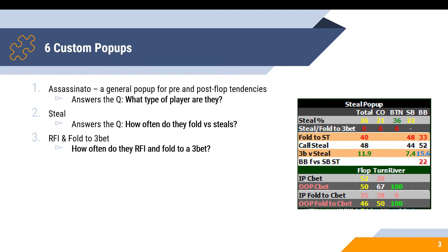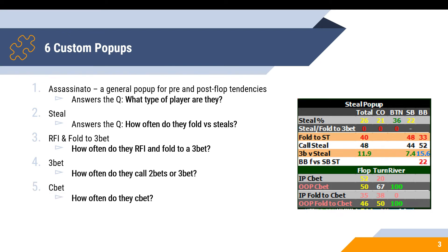The third pop-up is the raise-first-in and fold-to-3-bet pop-up. This tells us how often they raise first in and then fold to our 3-bet, allowing us to make a few more bluffs. The fourth pop-up is the 3-bet pop-up — how often do they call 2-bets or 3-bet? The fifth is the c-bet pop-up, which tells us how often they c-bet and fold to a c-bet, answering how often they fold versus a c-bet.